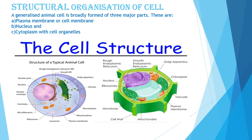Now let's study the structural organization of the cell. A generalized animal cell is broadly formed of three major parts: plasma membrane or cell membrane, nucleus, and cytoplasm with cell organelles. A plant cell is a little different from an animal cell — it has a cell wall and a large vacuole in addition to these structures. So a plant cell has a plasma membrane, a cell wall, and a large vacuole. You will study these in detail later in the chapter.